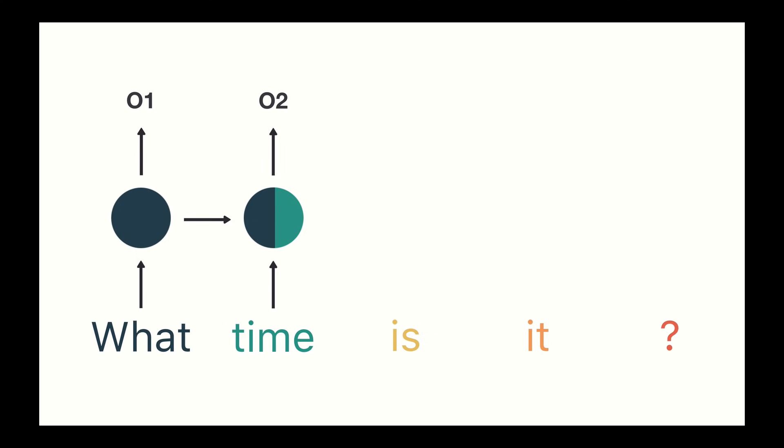Remember that the hidden state represents information from all previous steps. The RNN now has information on both the words 'what' and 'time.' We repeat this process until the final step. You can see by the final step the RNN has encoded information from all the words in the previous steps.